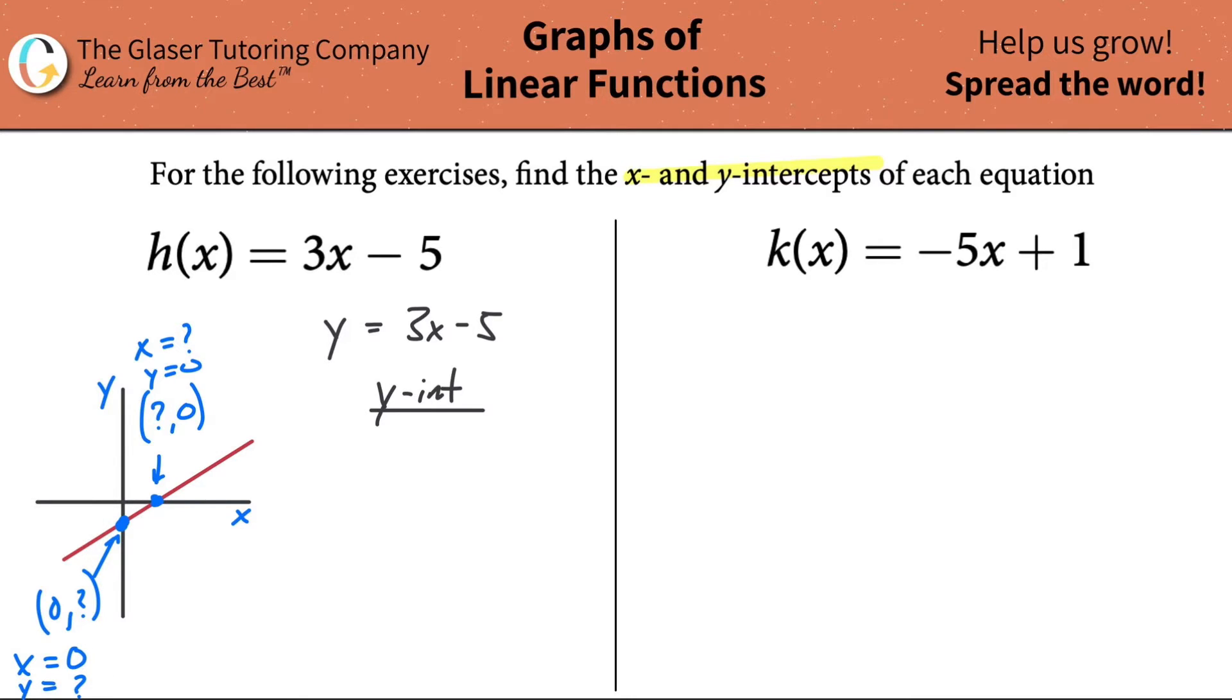So what you can do is you can take this zero value and plug it in for x in your equation. When you do that, what's going to happen is you're going to get then one unknown. Three times zero is three times zero minus five. So notice this equation has one unknown. So when you solve this equation for y, essentially what you're solving for is the value of y when x is zero. So let's do it. Three times zero is obviously zero and then minus five.